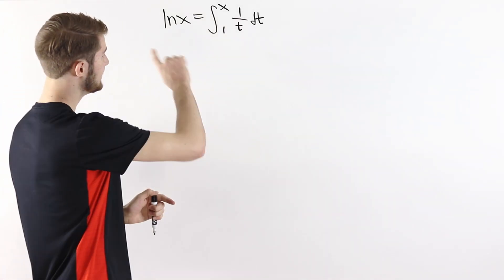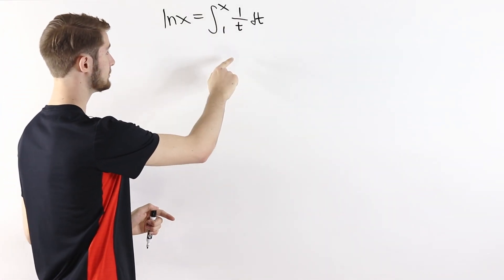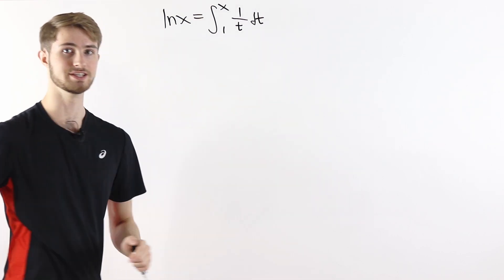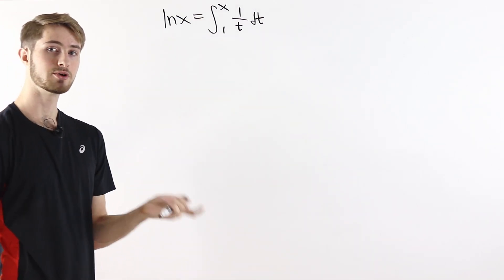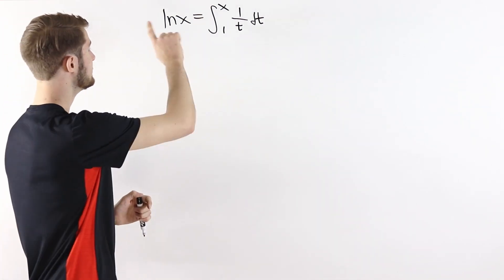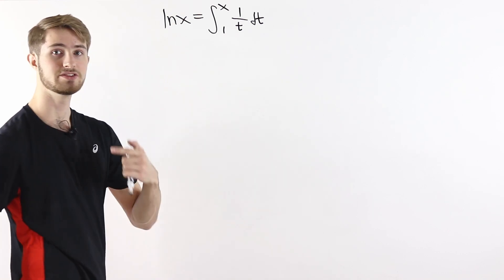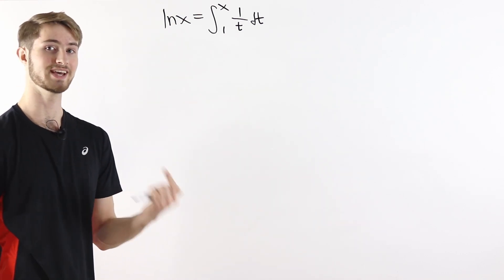We are going to prove that the natural log of x equals the integral from 1 to x of 1 over t dt. The key property of the natural log of x is that it's the inverse function of e to the x.